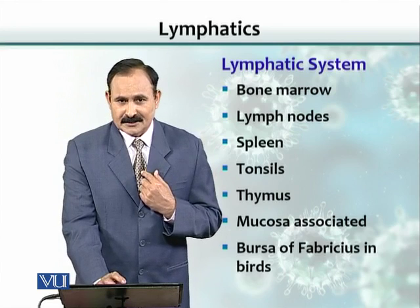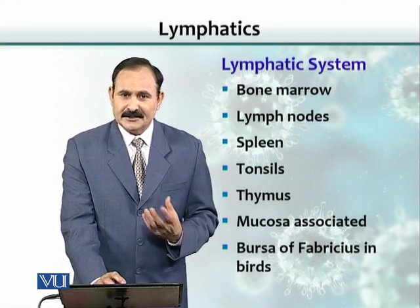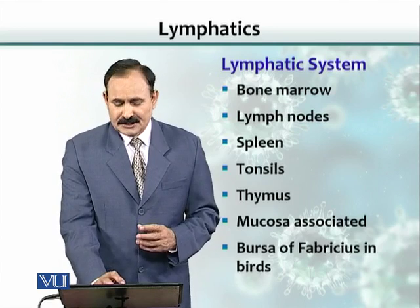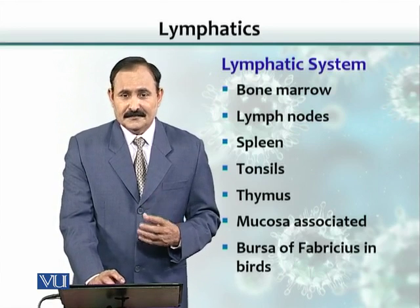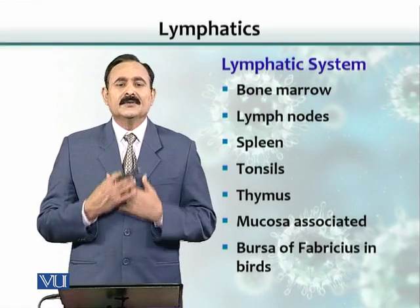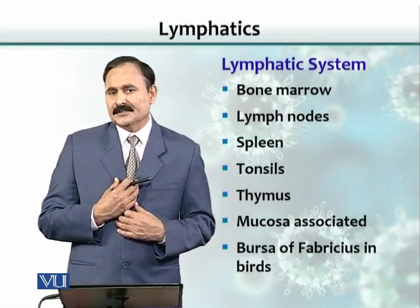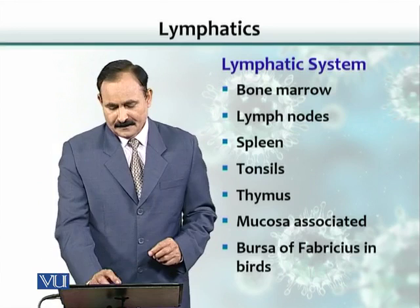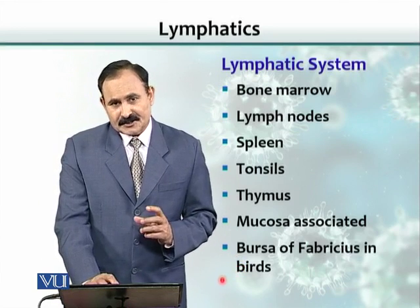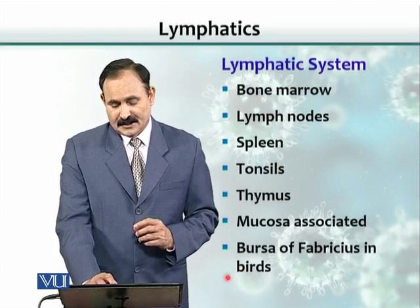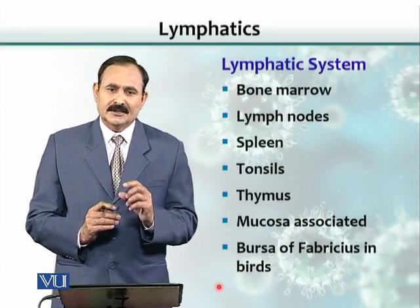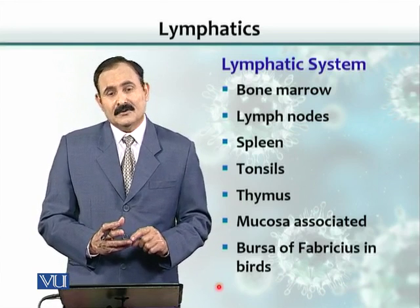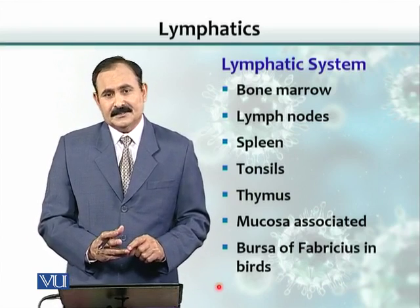Tonsils are lymphoid organs. The thymus is a special lymphoid organ that makes all T-cells. Mucosa-associated lymphoid structures are present all along our tubular organs like the intestines, respiratory system, and urogenital system — there are lymphoid aggregations under the mucosa. In birds, there is a special structure called the bursa of Fabricius, a small structure close to the cloaca that makes B lymphocytes. In mammals, B lymphocytes are made by the bone marrow, but in birds, it is the bursa of Fabricius.